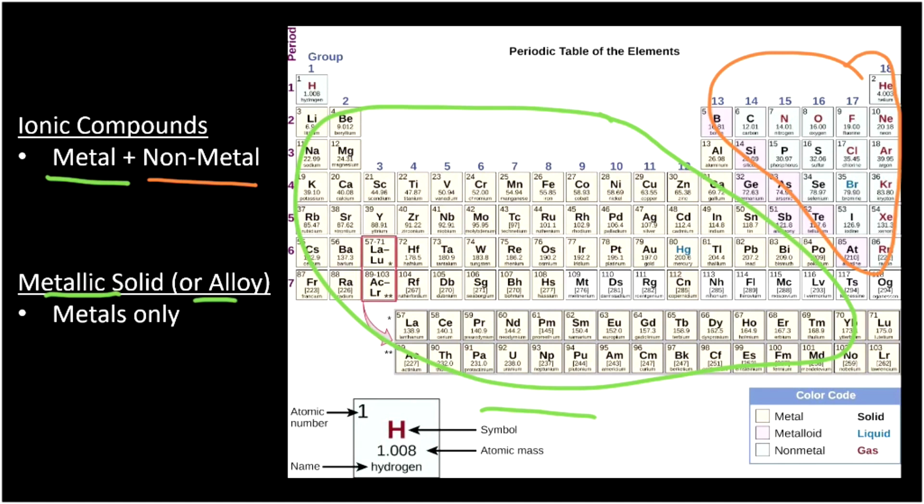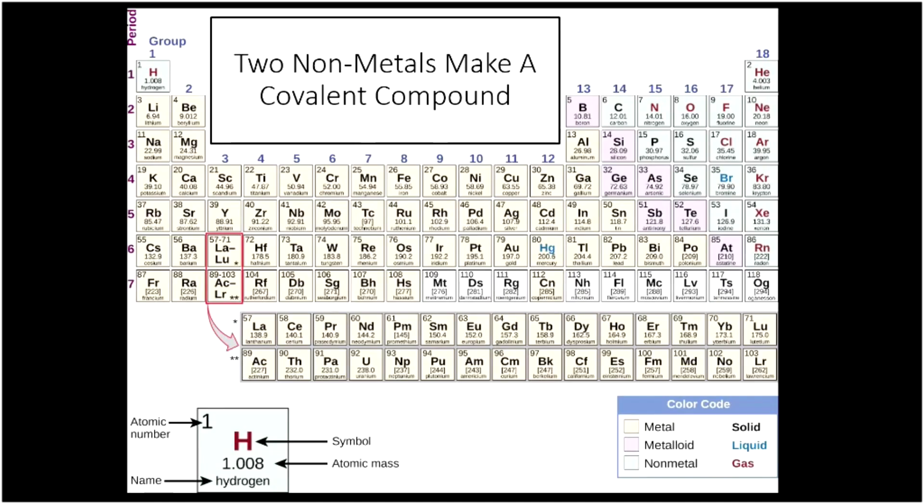But what happens when we put together two non-metals? When we put together two non-metals, we get what's called a covalent compound. And that's the other category of compound that we're going to study in detail in this class. So basically, if we grab two things from over here on the right-hand side of the periodic table, we'll get a covalent compound. They turn out to have different properties than ionic compounds, and their bonds work differently.